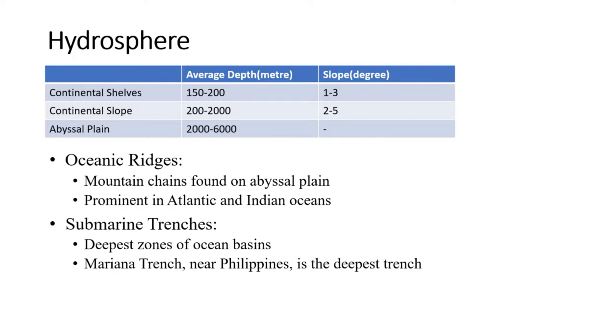Ocean bottom is much more diversified than the land surface. Generally, the ocean basins are characterized by four relief zones: continental shelf, continental slope, abyssal plains and oceanic trenches. These are general but there can be subcategories too. So let's talk about these relief features one by one.